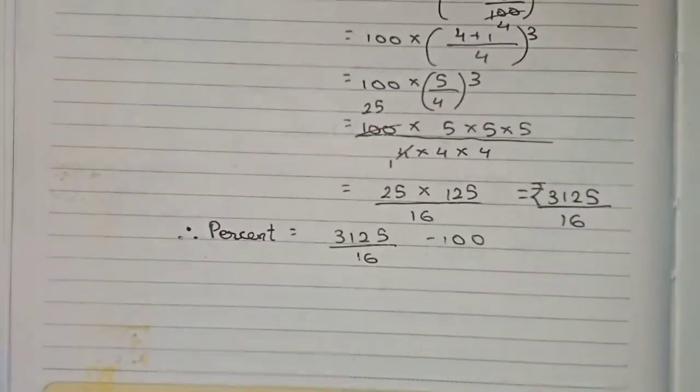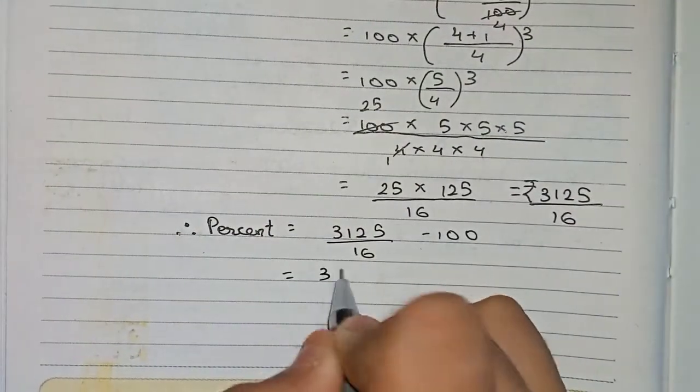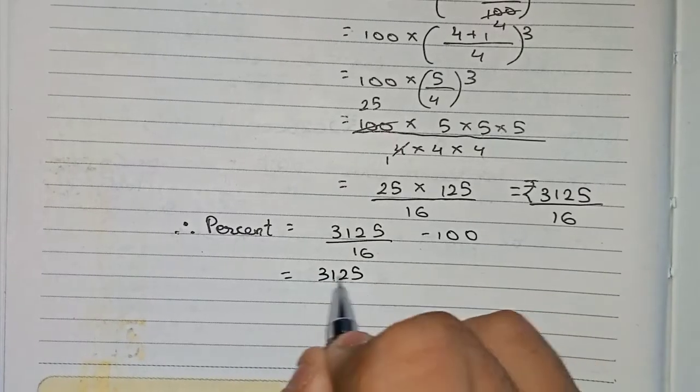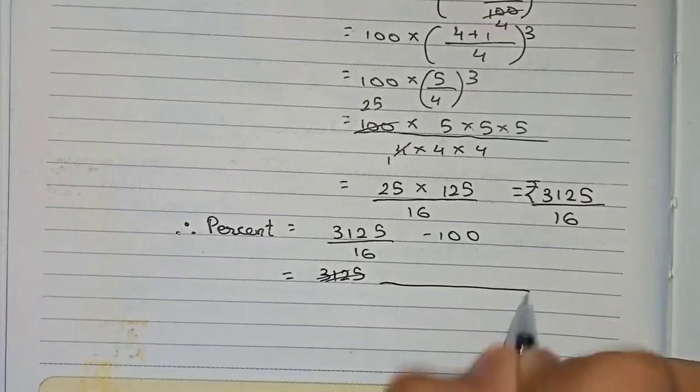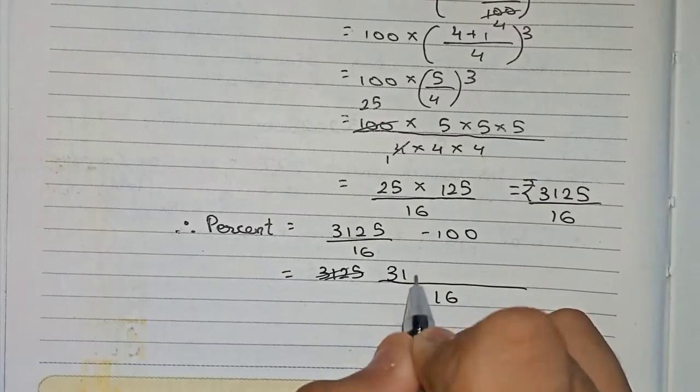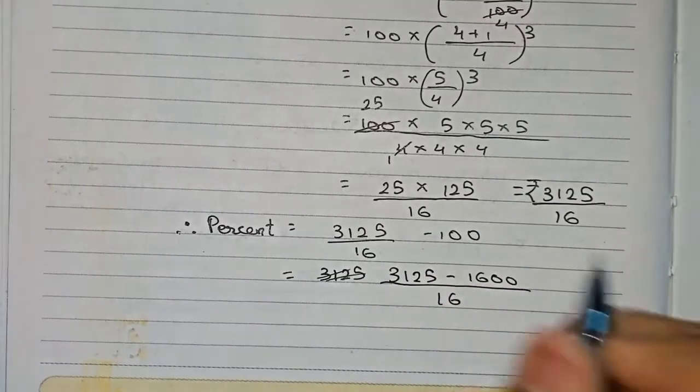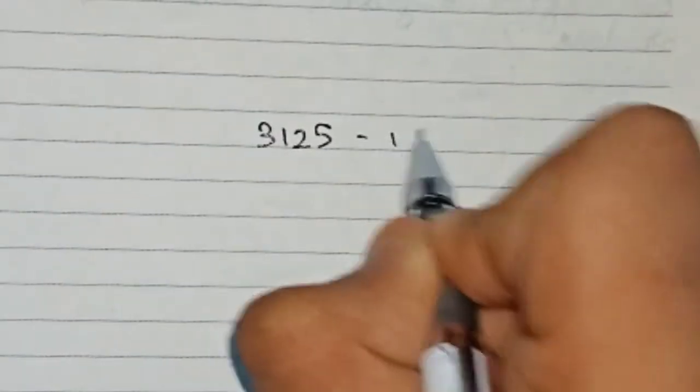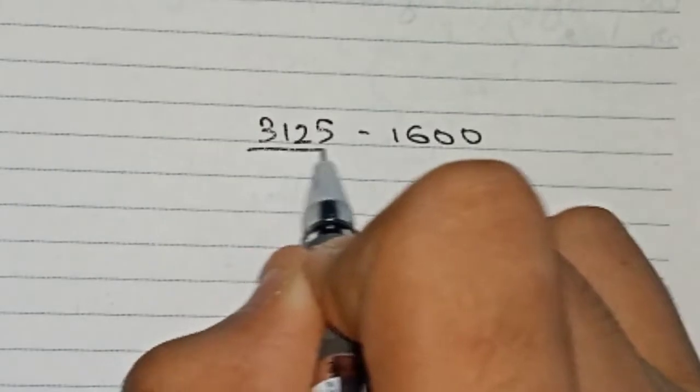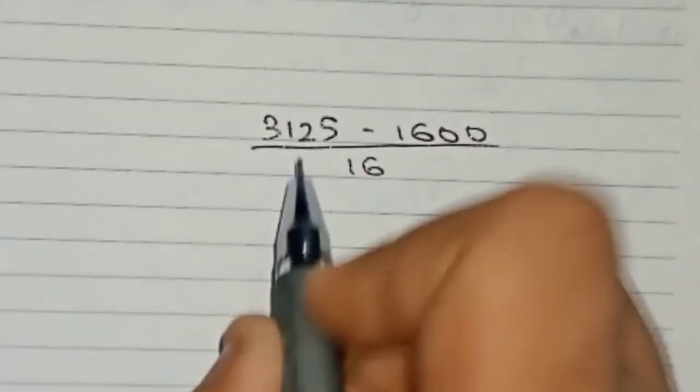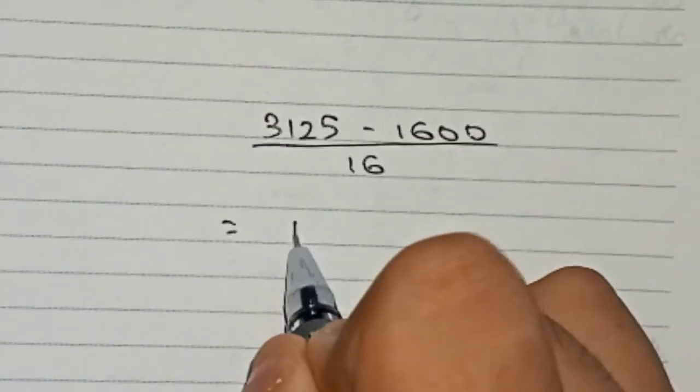3125/16 - 100 = (3125 - 1600)/16 = 1525/16.